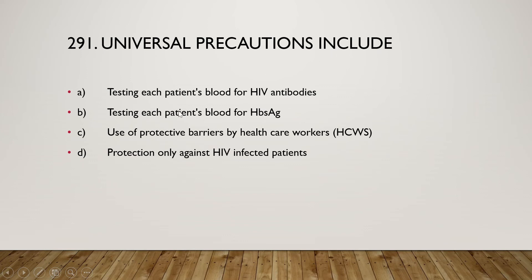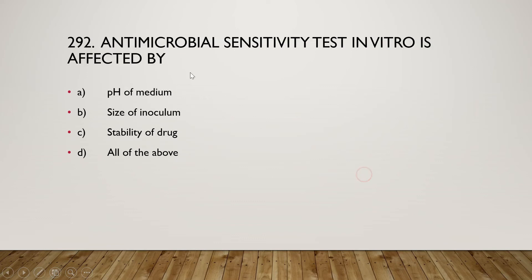The next question is: universal precautions include (A) testing each patient's blood for HIV antibodies, (B) testing each patient's blood for hepatitis B antigen, (C) use of protective barriers by healthcare workers, or (D) protection only against HIV-infected patients. The right answer is option C — universal precautions include use of protective barriers by healthcare workers.